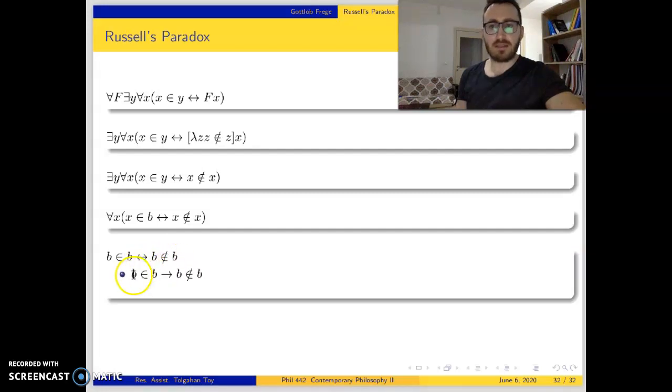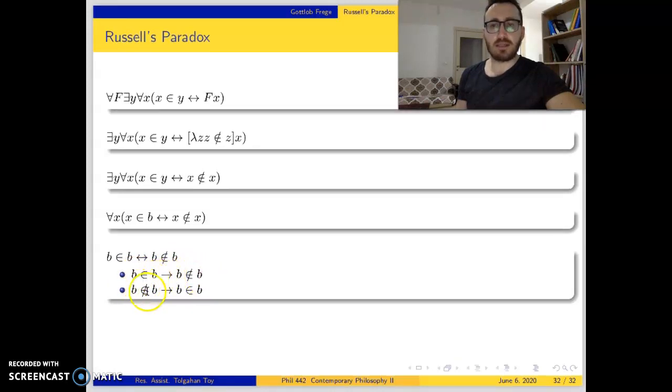If b is an element of b, then b is not an element of b. If b is not an element of b, then b is an element of b. So we have a contradiction. Frege's system is inconsistent and his system fails. That's the end of Russell's paradox part. Thanks.